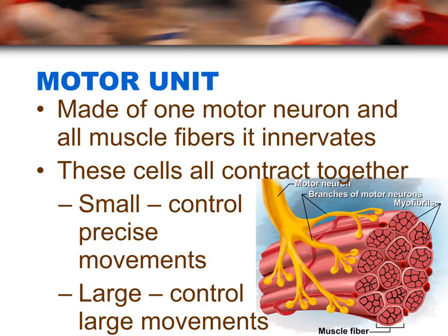There are two different types of motor units. A small motor unit has one nerve that controls very few muscle cells, and a larger motor unit controls a bigger group of muscles. Small motor units are for precise movement, like the motions in your hands and facial muscles. Large motor units control muscles like those in your thigh, legs, and back.